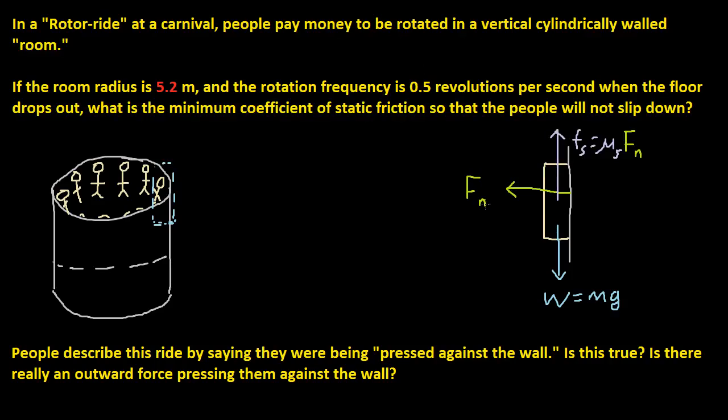So we know that because this is spinning, we know that this normal force is acting as a centripetal force. So what we can do here now is we can say that the normal force is equal to mv squared over r.